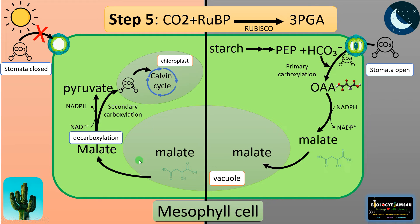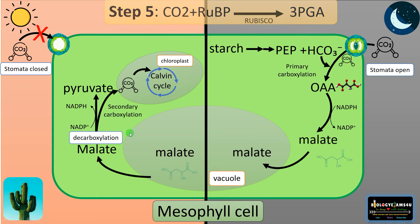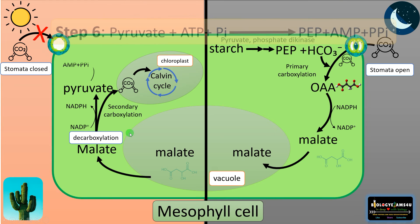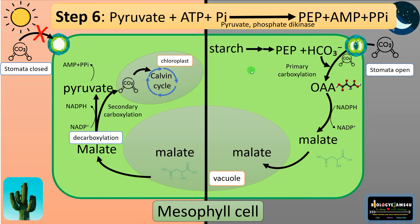By this pathway, these plants can carry out the Calvin cycle even without opening the stomata. The final step is regeneration of phosphoenolpyruvate. A phosphate is added to the pyruvate molecule; ATP is utilized in the process, and the enzyme is pyruvate phosphate dikinase. This forms PEP — phosphoenolpyruvate — thus completing the pathway.